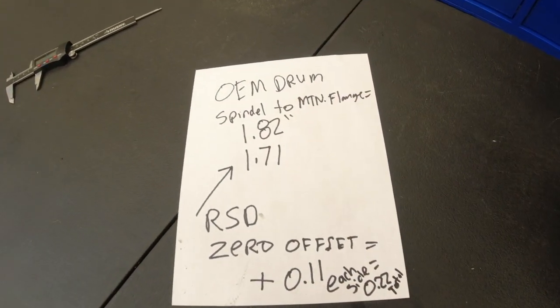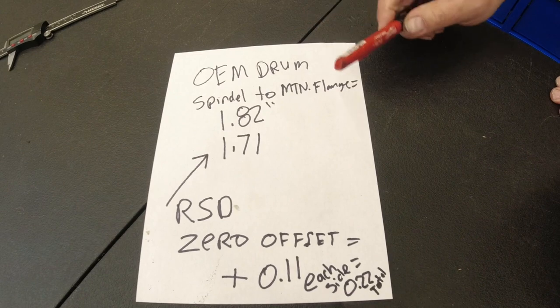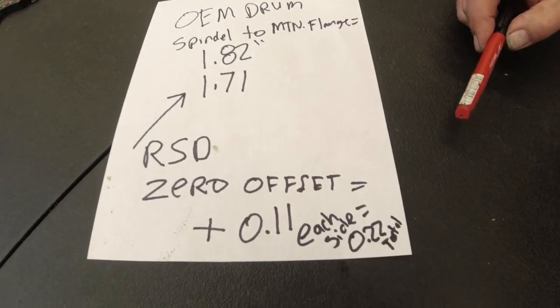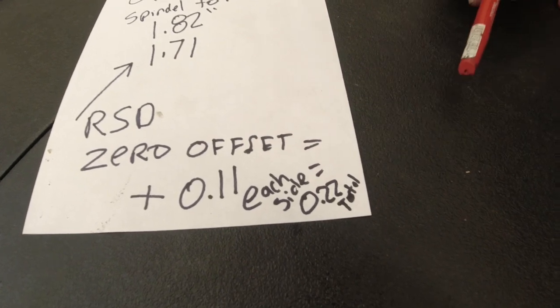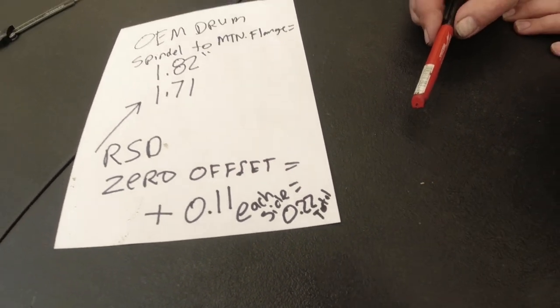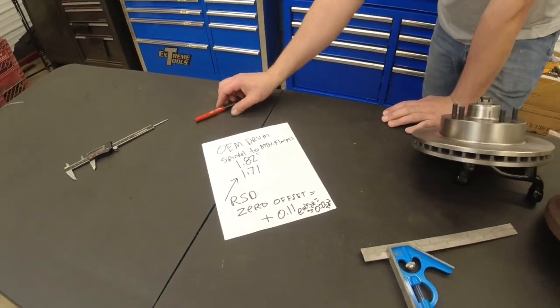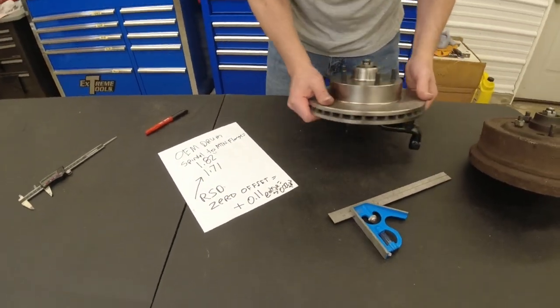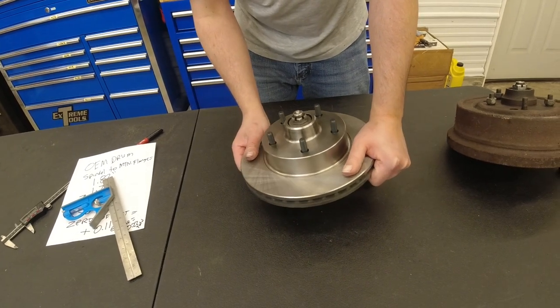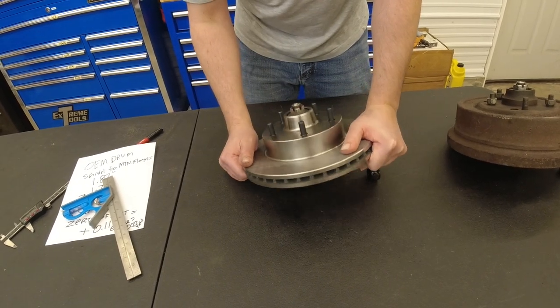So there you have it, folks. Our good Right Stuff Detailing zero offsets are actually 0.11 on each side, which is a 0.22 track width increase, but it's very nominal and very presentable for a disc brake assembly that will fit on a OEM disc brake 14 inch wheel. I think that is a very good compromise.